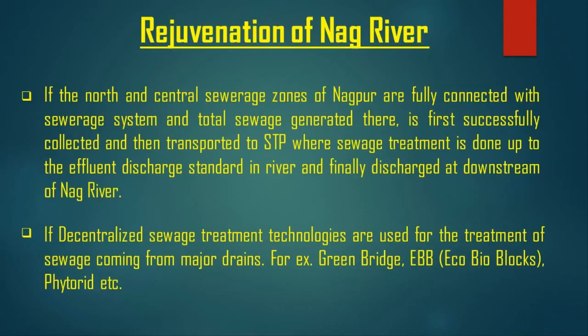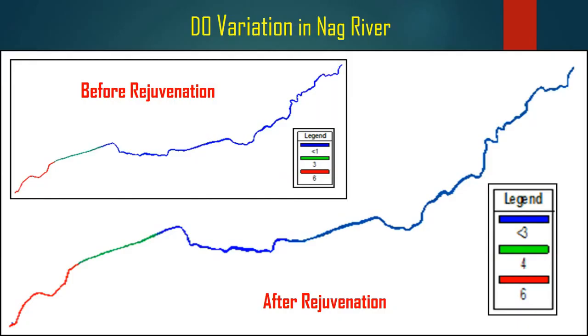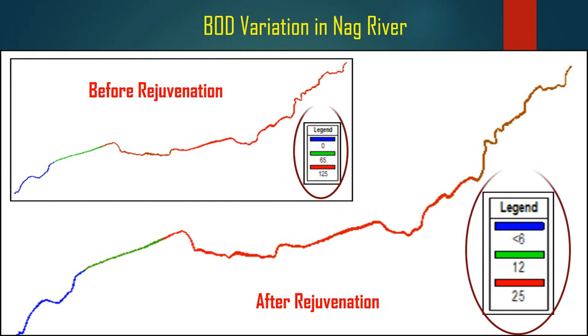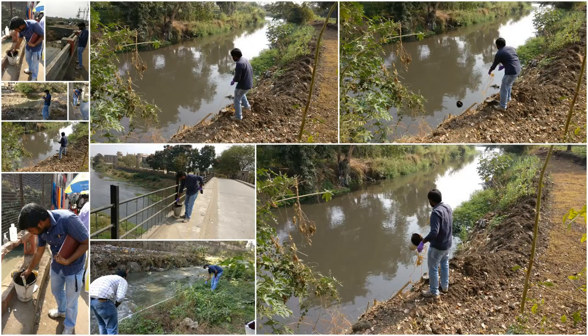The rejuvenation of Nag River is performed by treating sewage up to the effluent discharge standard and discharging it at the downstream of Nag River, and also by applying decentralized sewage treatment technologies for the treatment of sewage coming from the major drains. The screen shows the variation in dissolved oxygen and BOD in Nag River under rejuvenated conditions, along with site photographs captured during sampling.